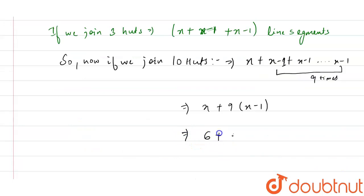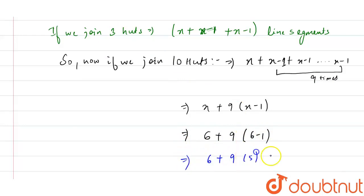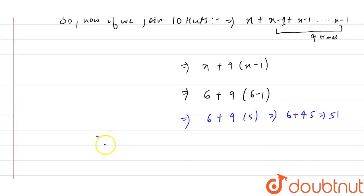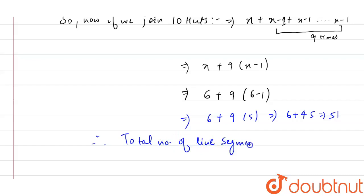We get: x + 9 × (x − 1). Since the first hut has 6 line segments, x = 6. So: 6 + 9 × (6 − 1) = 6 + 9 × 5 = 6 + 45 = 51. The total number of line segments in 10 huts equals 51.